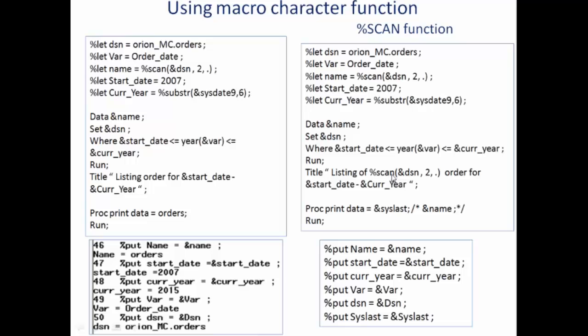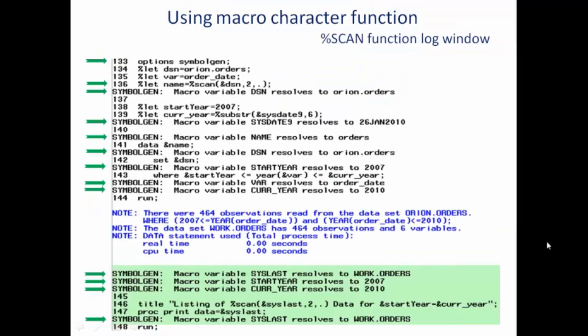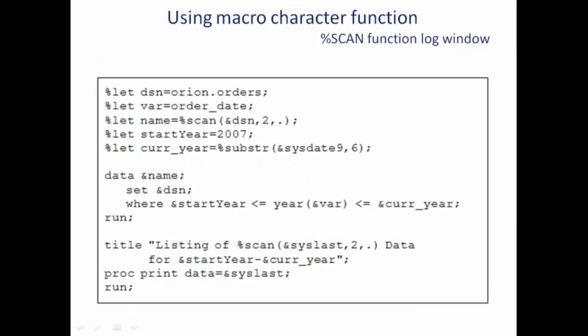Here some example is given by help of scan function. The same oran_mc.orders dataset we are referring. Out of that we are creating a new macro variable name using the scan function on this variable, interested on the second part of the name. So second part is mc.orders. Once you run the program we get information in log window like this. This is the same program which we discussed, but it's written standalone on a slide. Again here we are referring oran.orders variable, name using the scan function, start date we are referring, current year we are referring with substring function. And after that in title we are referring the scan.